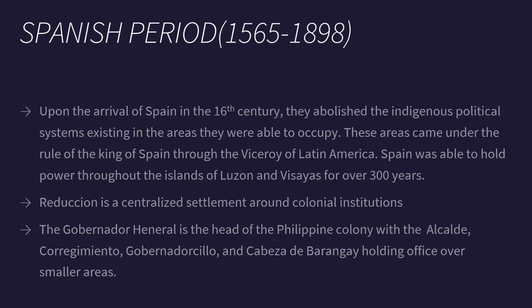The Spanish period is from 1565 to 1898. Upon the arrival of Spain in the 16th century, they abolished the indigenous political systems existing in the areas they were able to occupy. These areas came under the rule of the King of Spain. Through the rule of Latin America, Spain was able to hold power throughout the islands of Luzon and Visayas for over 300 years.